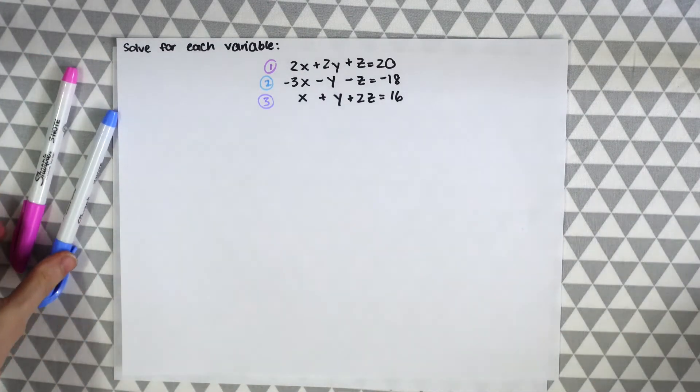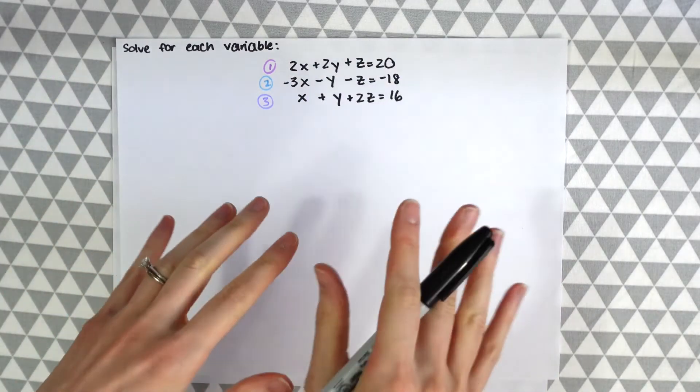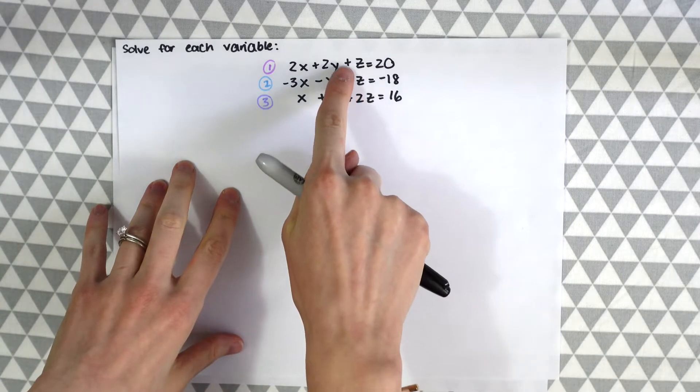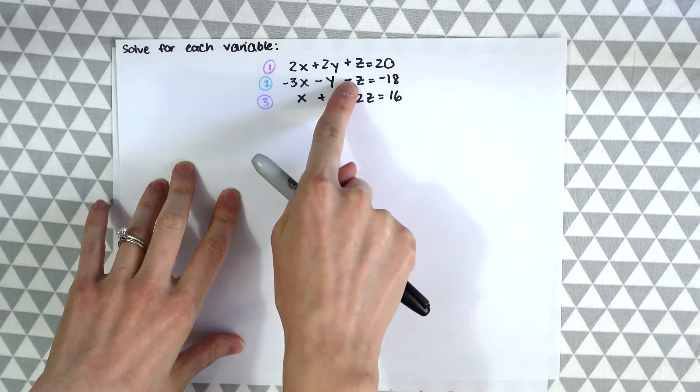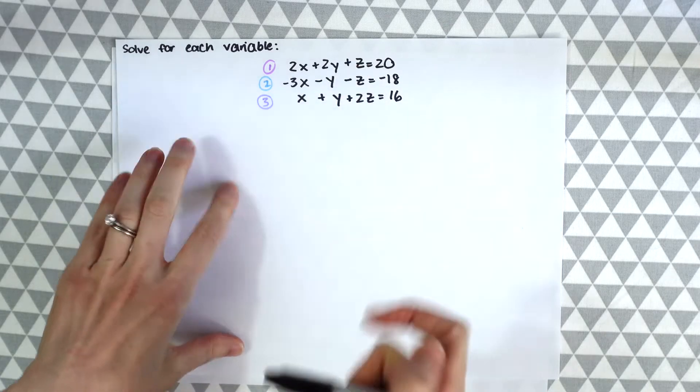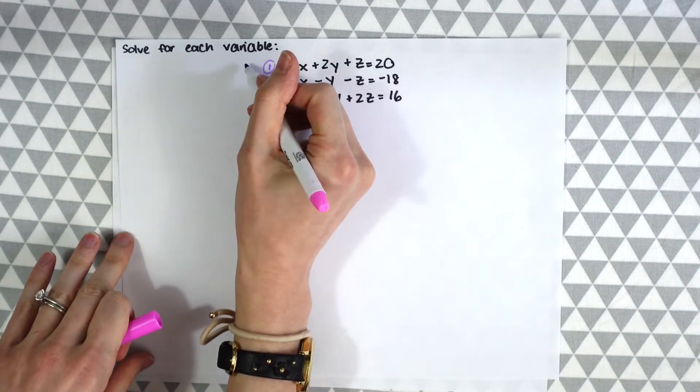So getting back to elimination, we want to pick two equations from our list here where something cancels out. So right away when I see these first two, I see that the Z's are gonna cancel because we have a positive Z and a minus Z. So if we add them together the Z's will cancel out, so let's just use the first two equations right here.